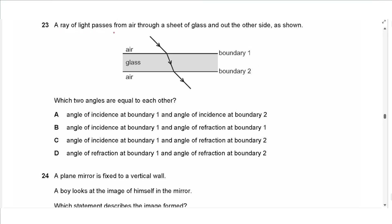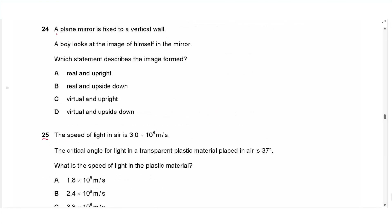Question 23: A ray of light passes from air through a sheet of glass and out the other side. Drawing normals at both boundaries, the angle of incidence at boundary 1 and the angle of refraction at boundary 2 are equal to each other. The answer is D.